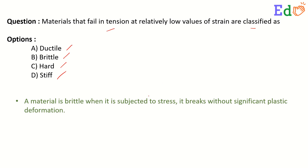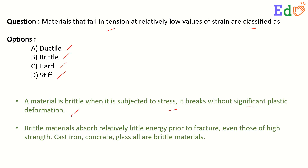A material is brittle when, subjected to stress, it breaks without significant plastic deformation. Brittle materials absorb relatively little energy prior to fracture, even those of high strength. Examples of brittle materials include cast iron.